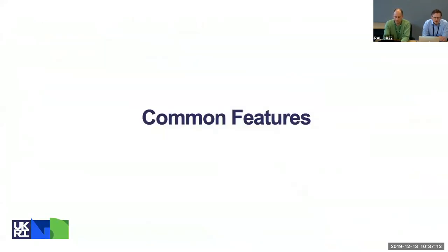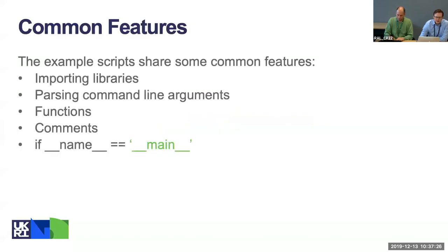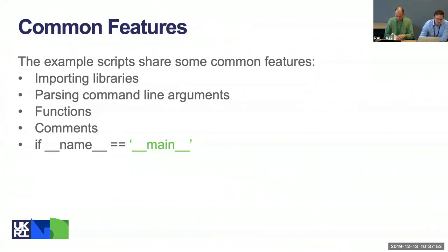We mentioned that we've got four examples and there are some common features between them. Rather than going through them one by one I've put them here at the beginning so we can discuss them before we see them in the code. We're going to talk about how to import libraries, how to give your script command line arguments and options, how to organize your code into functions, how to add comments to your code to make it easier to understand, and this 'if __name__ == __main__' thing that you might see quite often in scripts — what does it mean?